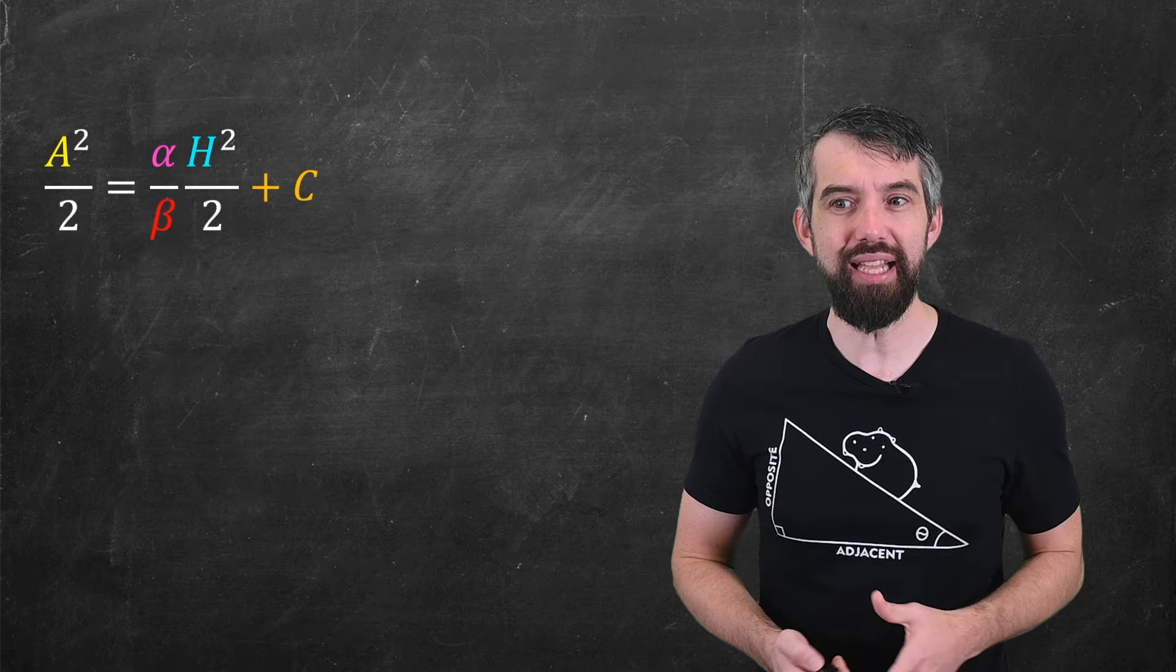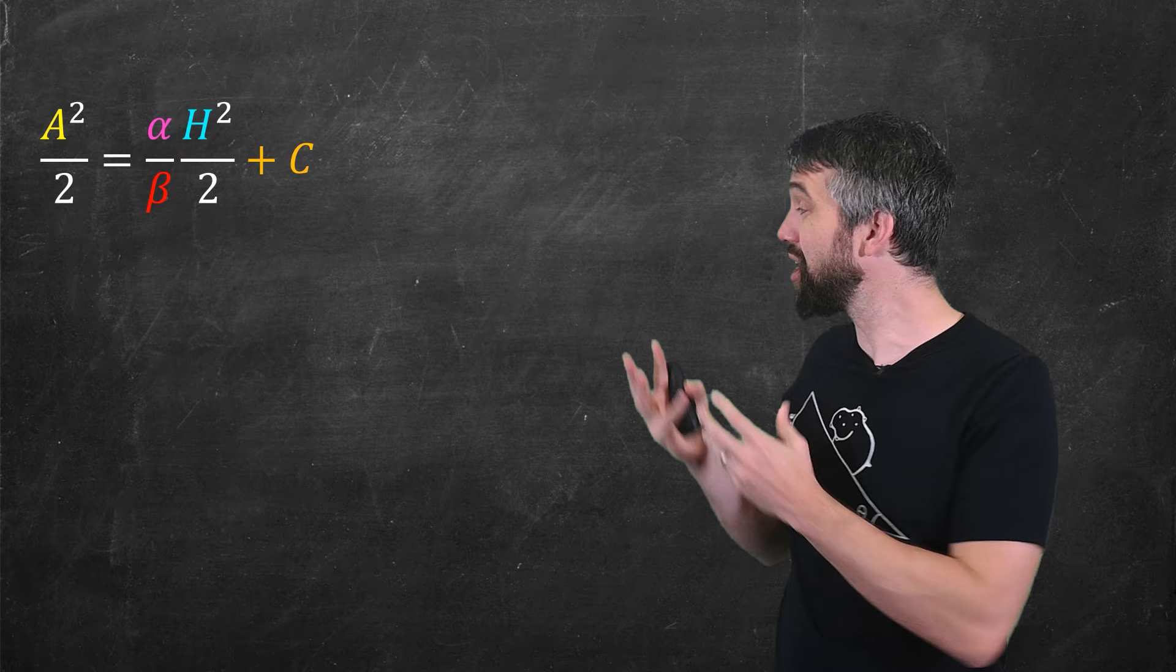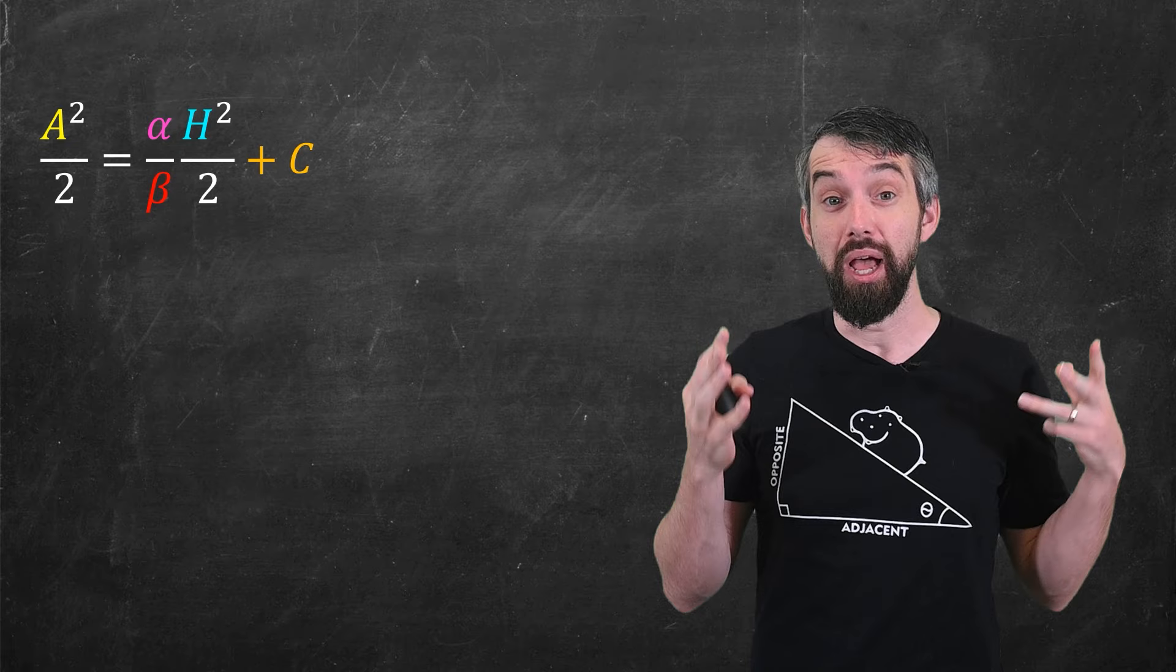This is an equation that relates the value of A and the value of H. It's got some constants in it. The alpha, the beta, and the two are just sort of part of the structure of the equations. But more importantly, it has this plus C, this integration constant plus C.